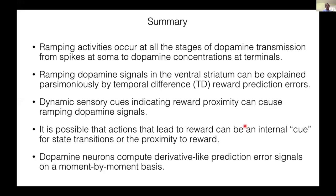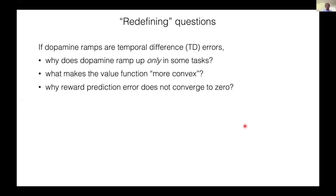Finally, dopamine neurons compute derivative-like prediction error signals on a moment-by-moment basis. This moment-by-moment computation of derivative-like signals is the hallmark of temporal difference error signals. To acknowledge, our experiment is the first empirical demonstration of this idea and unifies the computational interpretation of dopamine signals across time scales.